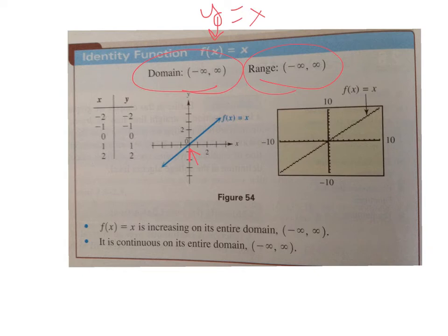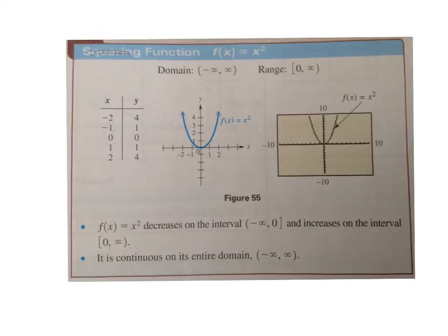Notice your book calls this the squaring function, but I've crossed that out. This is actually called a quadratic. I'm not sure why they call it a squaring function in this section. When we get to section 3.1, we'll do more graphing of quadratics. For now we just want to identify if it looks like a U - that's a quadratic function, and the graph of a quadratic is called a parabola.